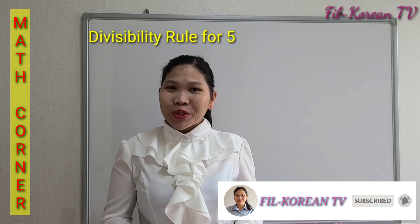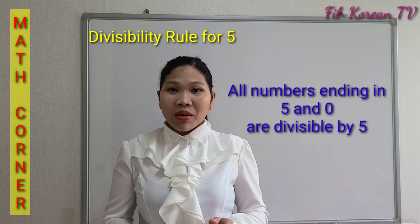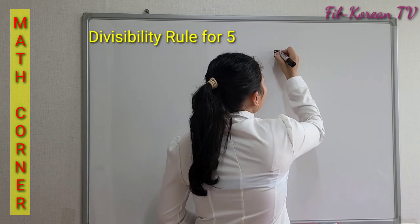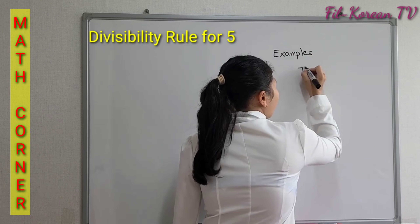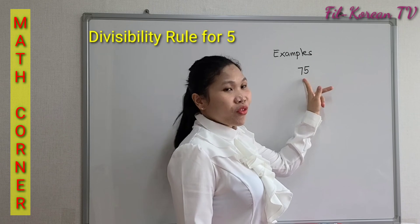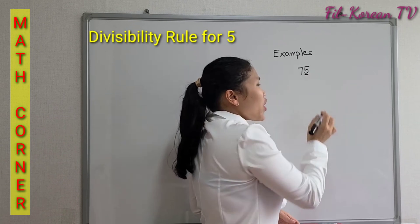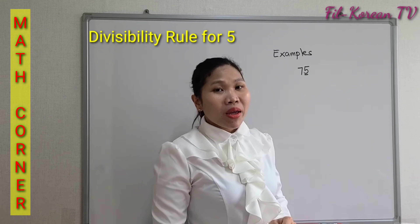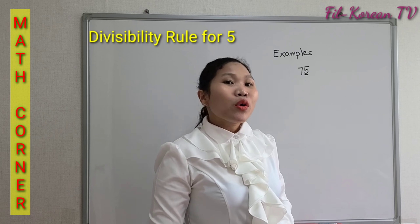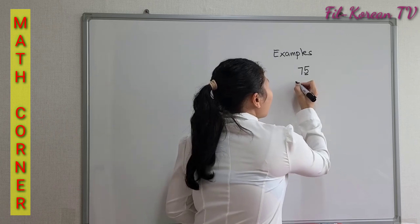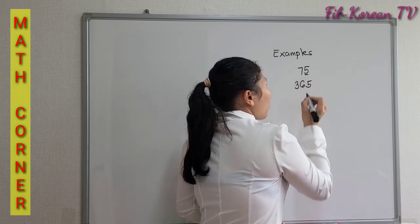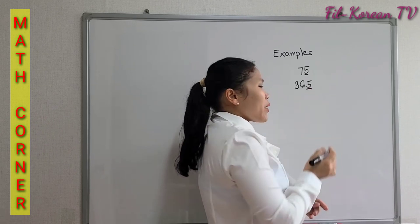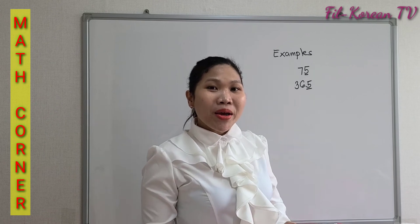All numbers ending in 0 and 5 are divisible by 5. For example, 75 ends in 5. Therefore, it is divisible by 5, meaning if we divide it by 5, the answer is exact or without a remainder. Another example: 365. The number 365 ends in 5, therefore it is divisible by 5.